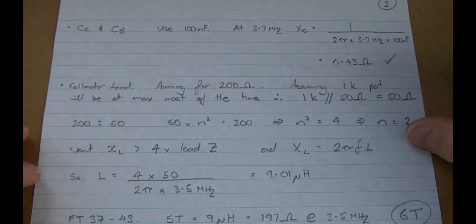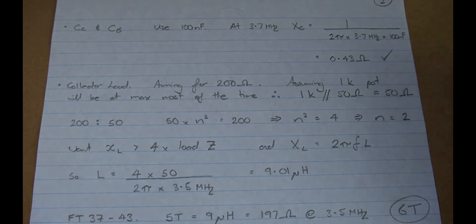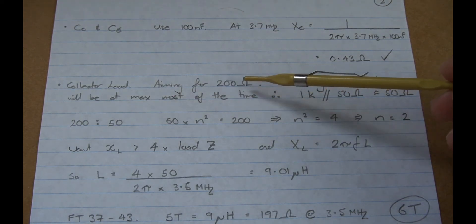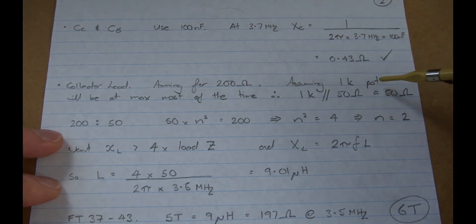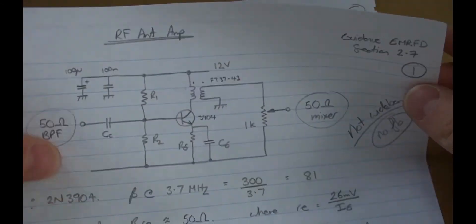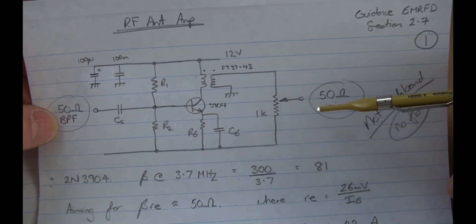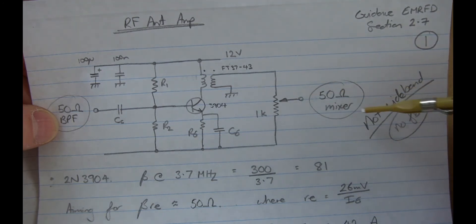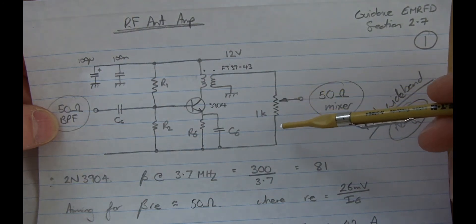Now for the collector load, if you look at experimental methods for RF design, there's some good guidance in section 2.7, and you hear it quite often, generally a good starting point is to present to the collector of this common emitter transistor about 200 ohms. So I'm going to aim to give that 200 ohms, and I'm also in my circuit going to, if you look back here, I want to be able to vary the gain coming out of this, and I'm going to keep it really simple. And I'm going to have, coming out of the bag here, just a 1k ohm variable resistor, with our 50 ohm mixer sitting on the wiper.